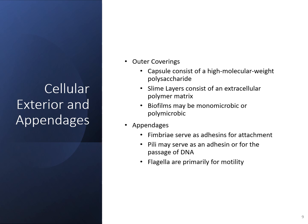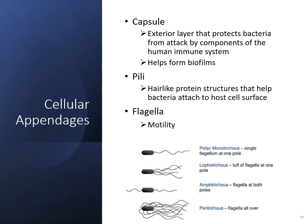Some organisms have appendages such as flagella or pili that help with attachment. The capsule is an exterior layer that protects the bacteria from the immune system and also helps form biofilms. Pili are hair-like projections around the outside surface that assist with attachment. Some organisms also have motility via flagella. Depending on the location of the flagella, different terminology applies — polar means one single flagellum, while more flagella or different placement changes the term.